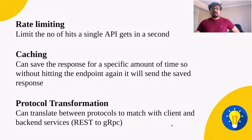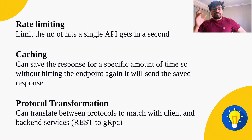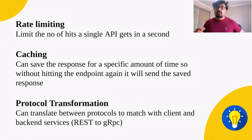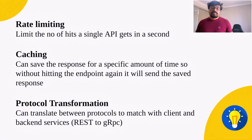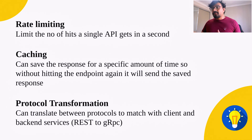Protocol transformation is also very important. Most people know about REST APIs, but there are multiple protocols like gRPC. With an API gateway, if the client uses REST to call the API but the backend uses gRPC, the gateway can transform the request to gRPC, get the response from the backend, convert it back to REST, and send it to the client.